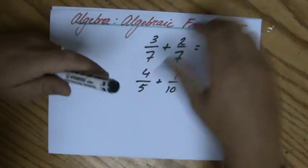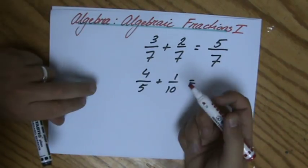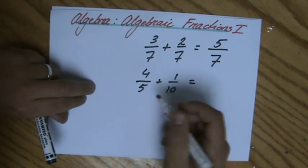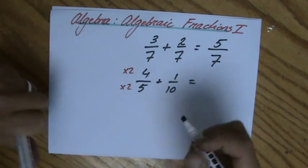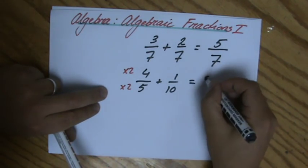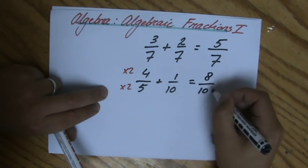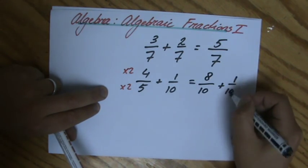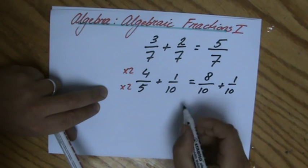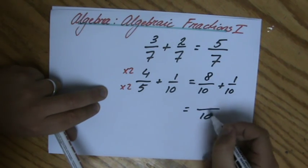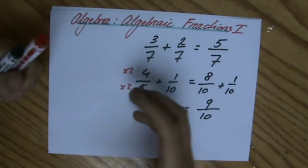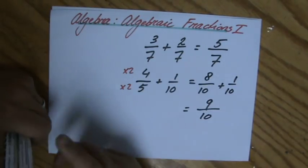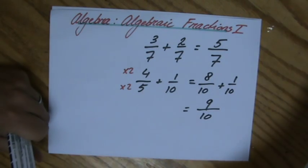So I have to manipulate the question. I have to find a common multiple. If I multiply the first fraction by 2 over 2, so 4 over 5 is equivalent to 8 over 10 plus 1 over 10. Now the two denominators are the same, so the answer would be 9 over 10. Okay, so please make sure you understand the basics of fractions before we go to algebraic fractions.